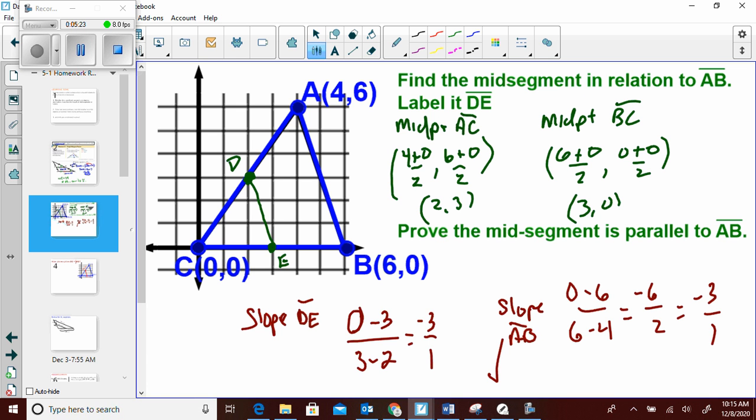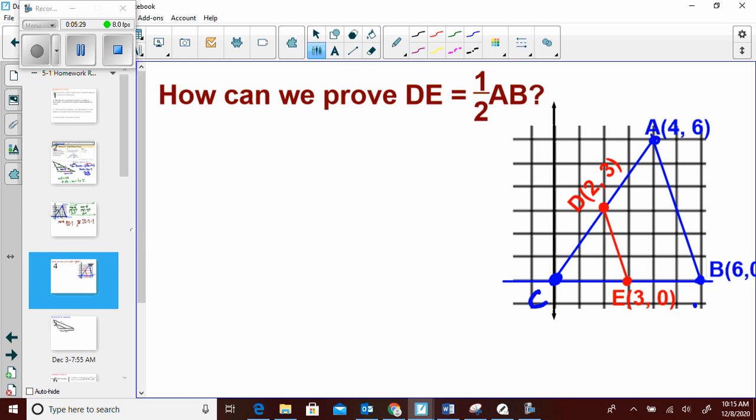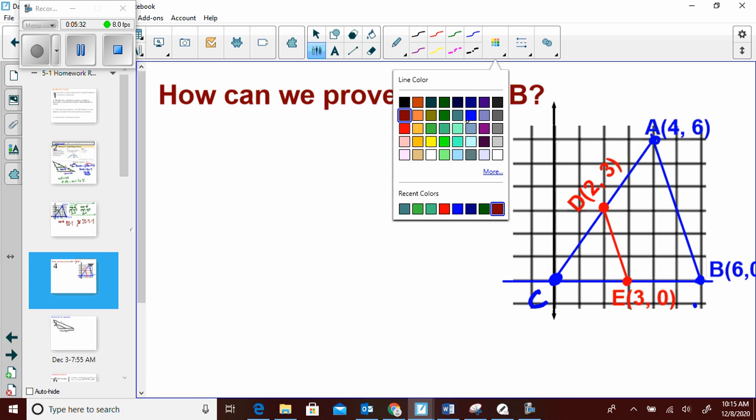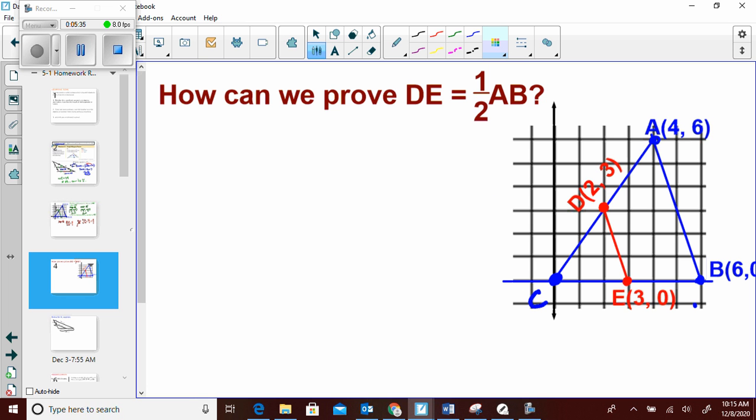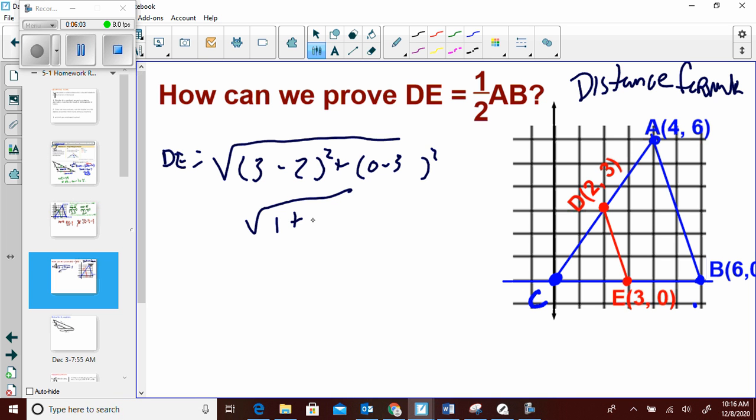Next, what do we know about the lengths? The mid-segment is half the base. So how can I prove that the mid-segment is half the base? That's right. Good old distance formula. So DE. All right. We got to subtract the x's. 3 minus 2. 0 minus 3. That becomes 1 squared is 1. Negative 3 squared is 9. Radical 10.